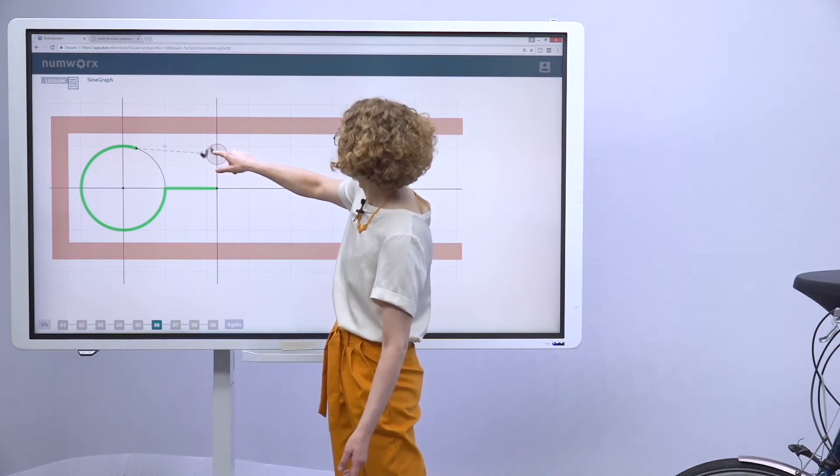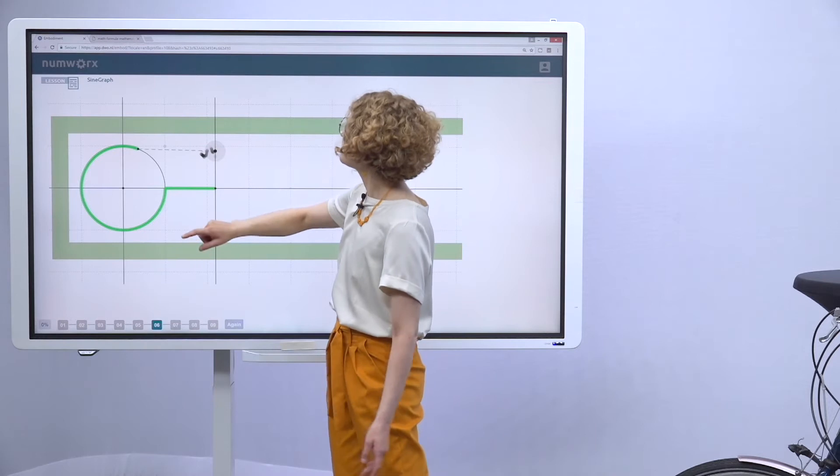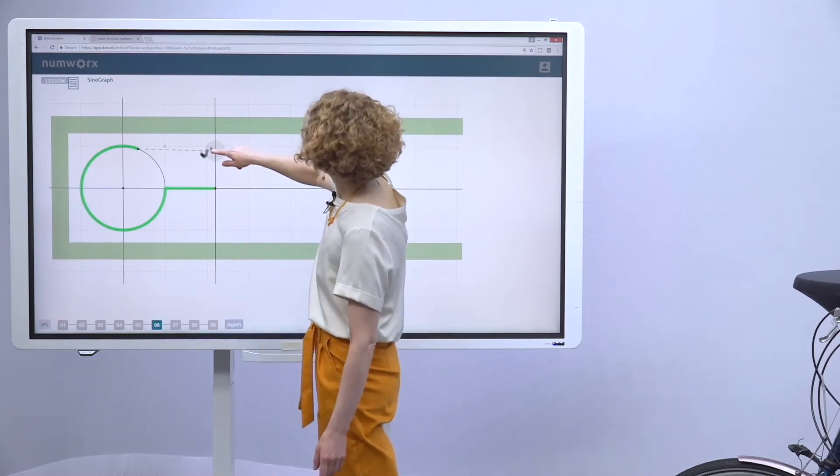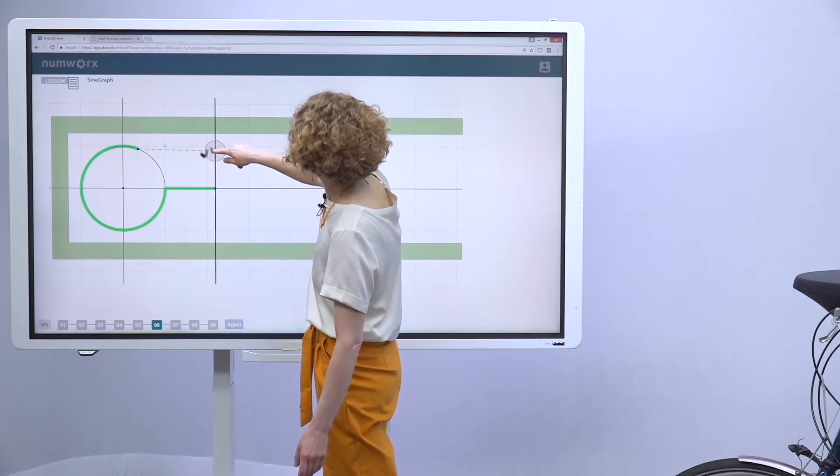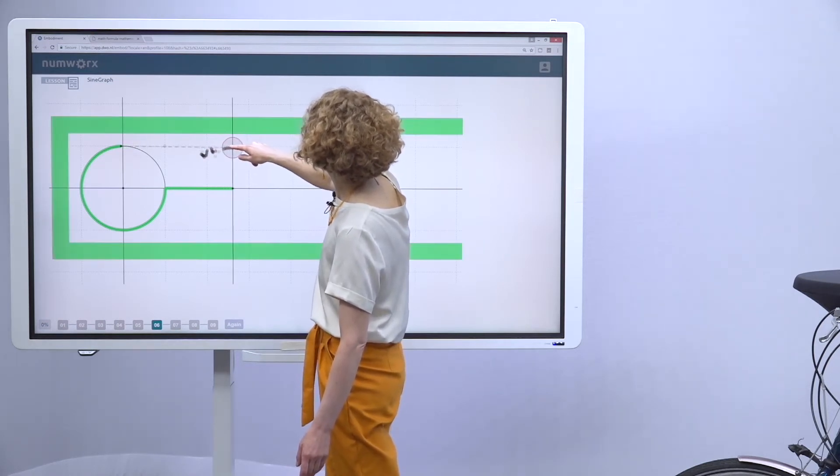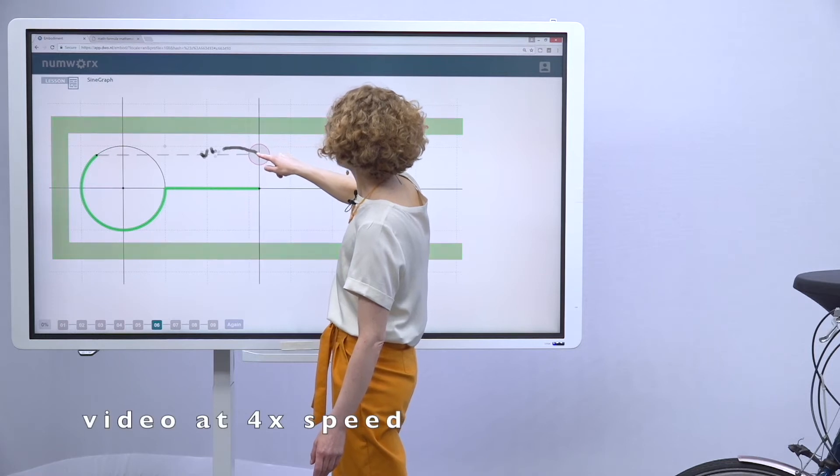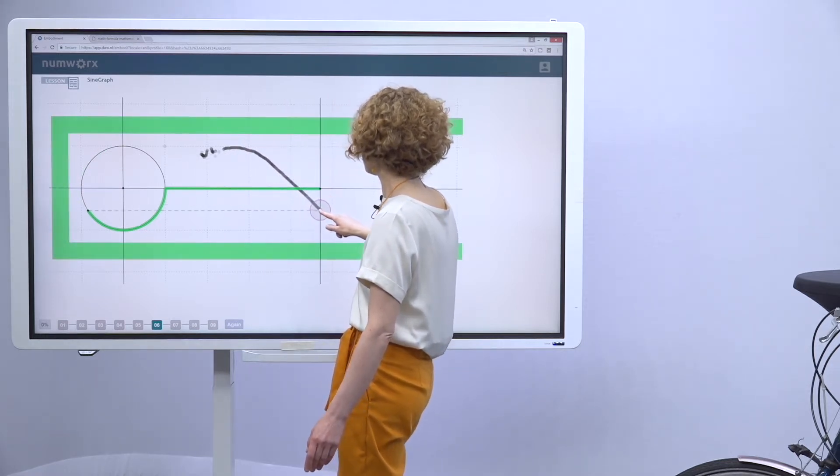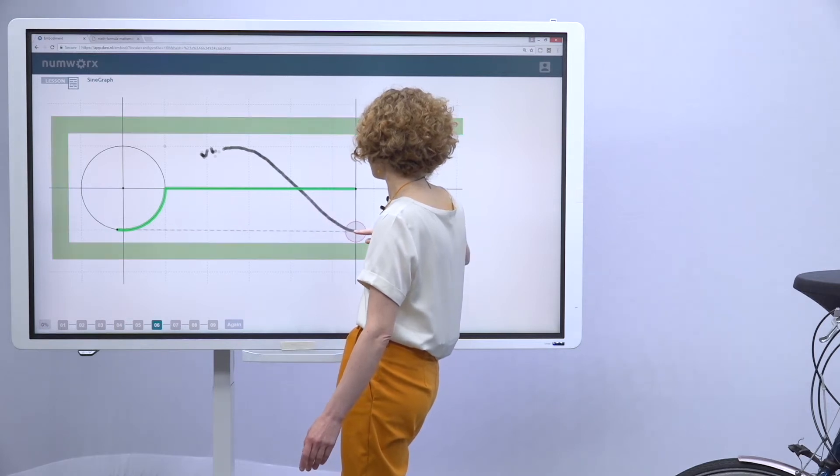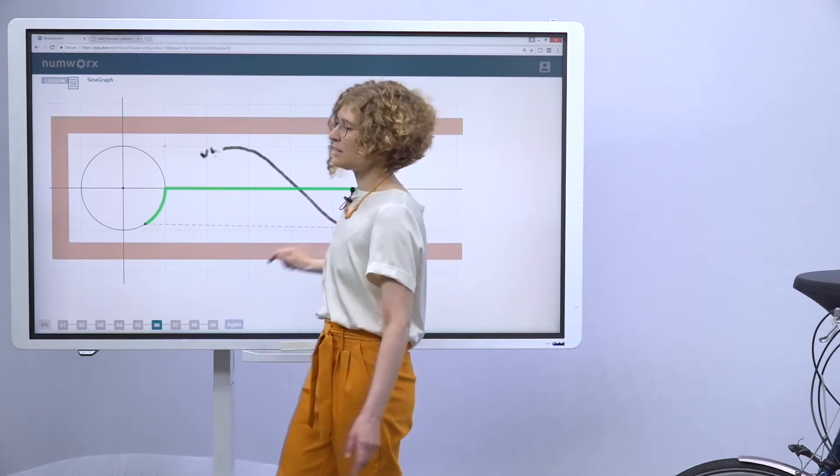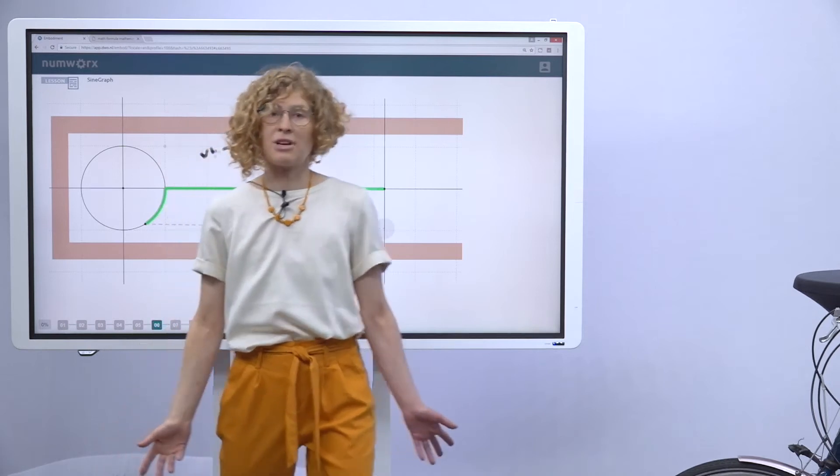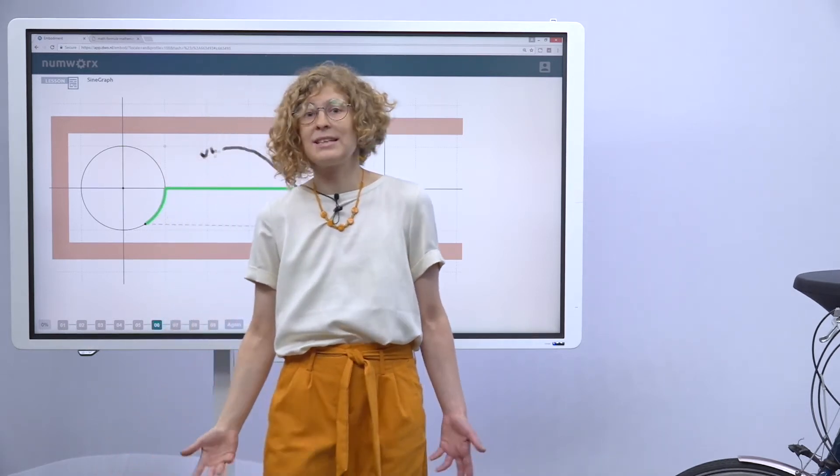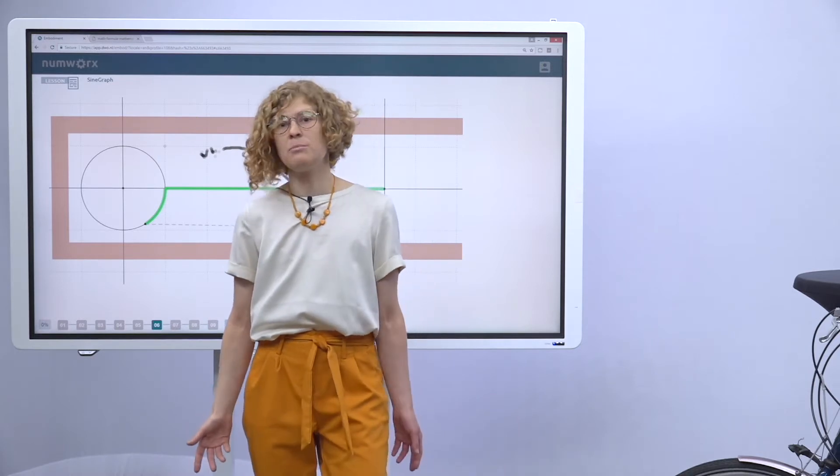Based on this continuous feedback, a student can maintain the frame green and generate a sine graph. In this way, a new way of movement—a sine movement—will emerge in a student's body.